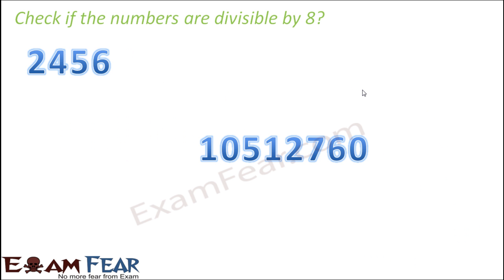So let us quickly see if these numbers are divisible by 8 or not. The first number is 2456. So let us focus on the last 3 digits, that is 456. So when you actually divide 456 by 8, what do you get? It is 8 5s are 40, so this is 56. 8 7s are 56. So here it is divisible by 8 and therefore this number as a whole is also divisible by 8.